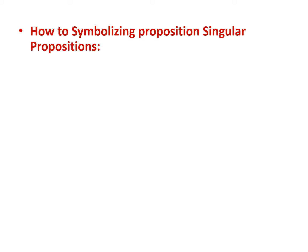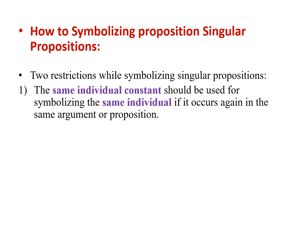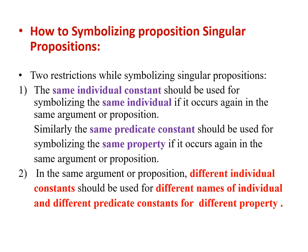While symbolizing singular propositions, two restrictions are to be noted. First, the same individual constant should be used for symbolizing the same individual if it occurs again in the same argument or proposition. Similarly, the same predicate constant should be used for the same property. Secondly, if there are different individuals, then different individual constants should be used; and if there are different predicates, then different predicate constants should be used.